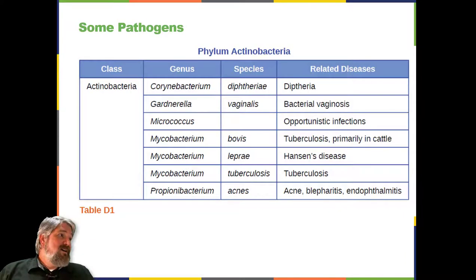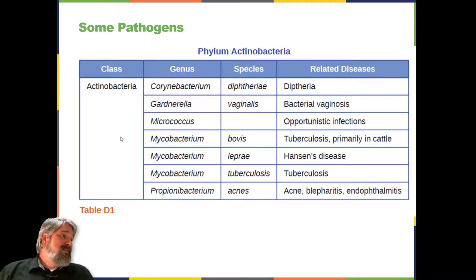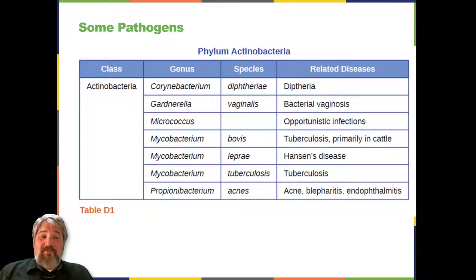Some pathogens in this phylum are listed in Appendix D, including most of the genera already mentioned, as well as tuberculosis in cattle, and Propionibacterium acnes, which is primarily responsible for acne.